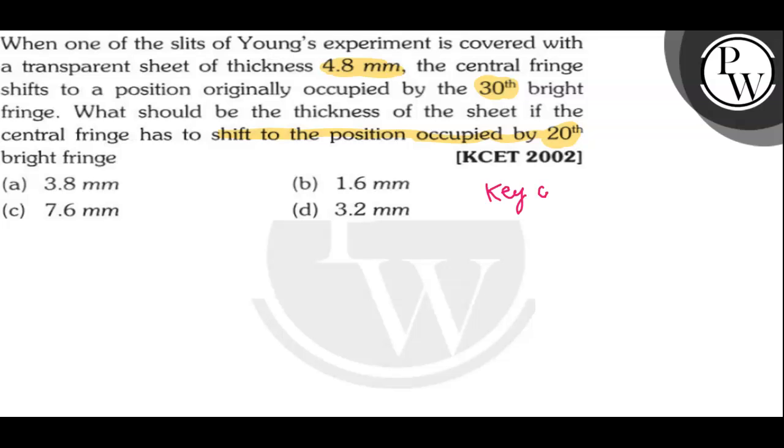The key concept of this question is based upon the shift formula: n equals mu minus 1 times t by lambda, thickness by lambda, which suggests that n is directly proportional to t.